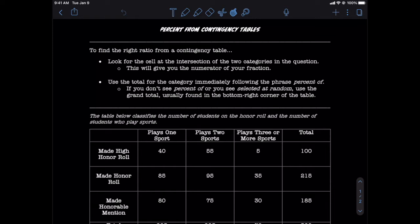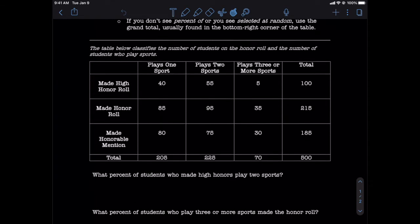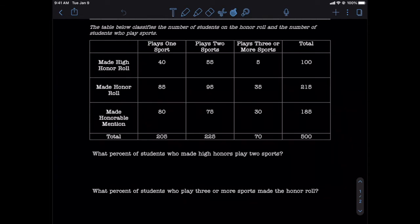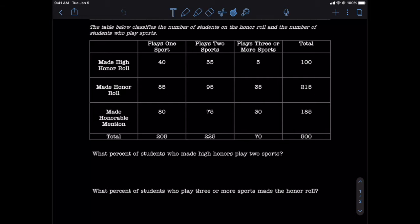I believe a few examples will go a long way in providing clarity for us, so let's go ahead and take a look at the examples down below. The contingency table that you see on your screen here is going to break down our data according to whether or not somebody made high honors, honors, or honorable mention, as well as the number of sports a student plays. Our task is to use this data to find the percentages that the questions are asking for. So without further ado, let's take a look at the first question.